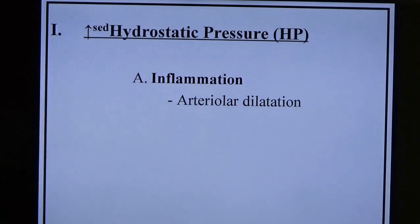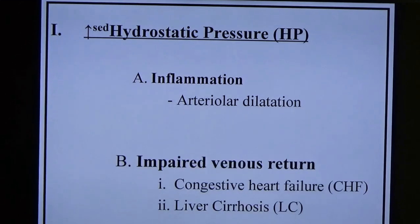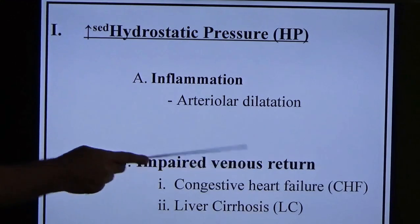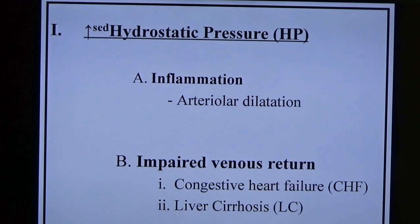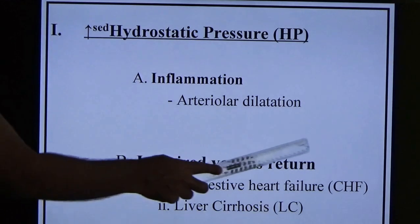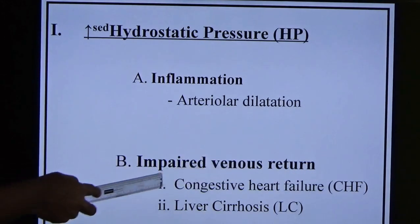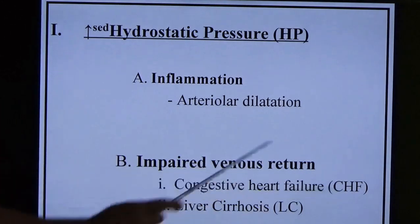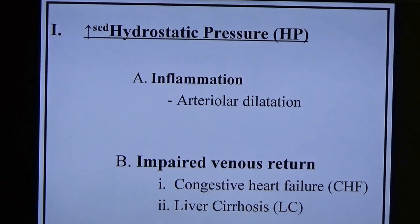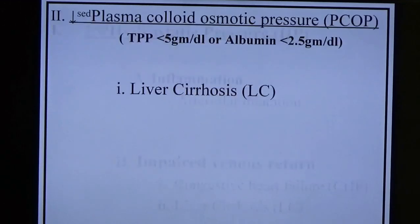Increased hydrostatic pressure is caused by inflammation (arterial dilatation, as discussed in the inflammatory chapter) and impaired venous return. Impaired venous return means obstruction of the venous system. Conditions responsible include congestive heart failure (CCF) and liver cirrhosis.